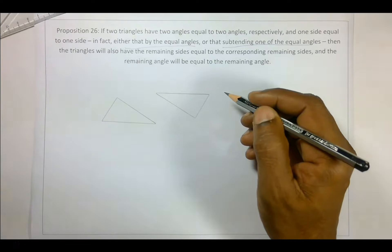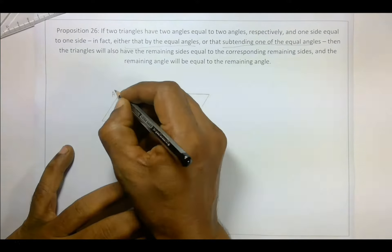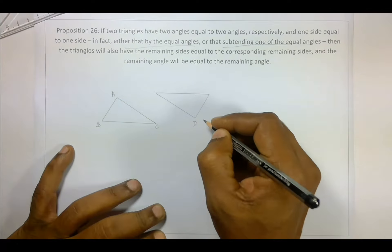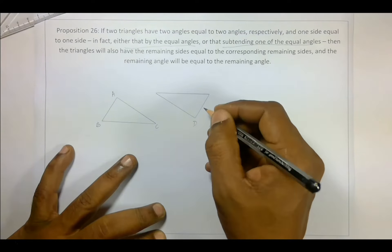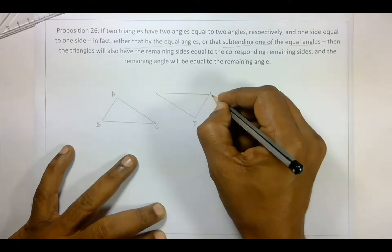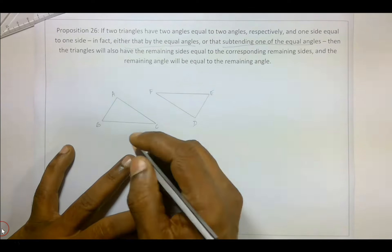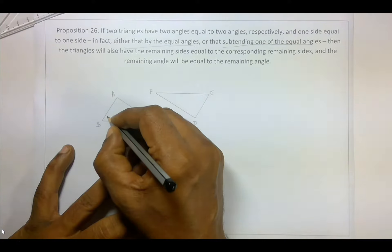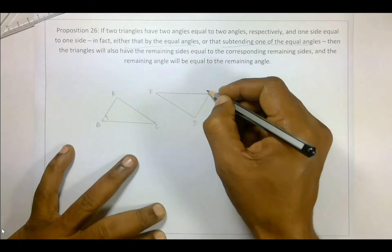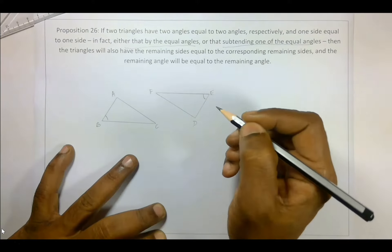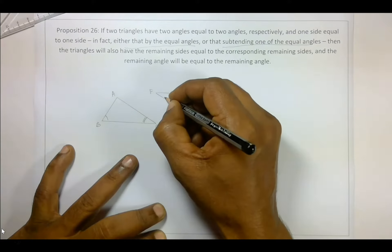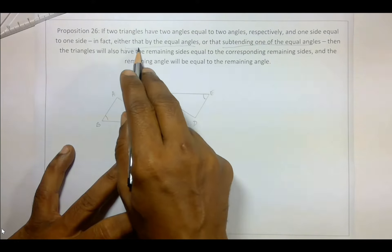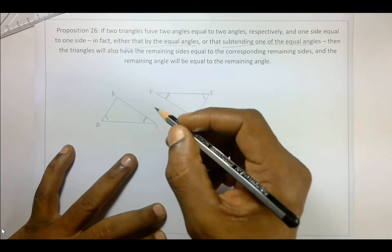These are the two triangles ABC and DEF. And two angles are equal to two angles, so let's say angle B is equal to angle E and angle C is equal to angle F.